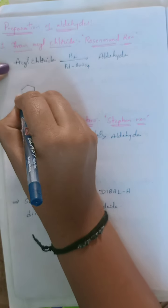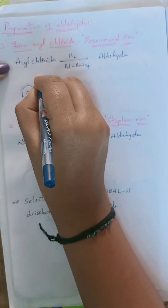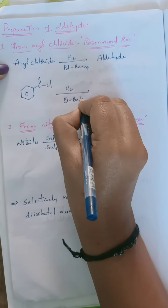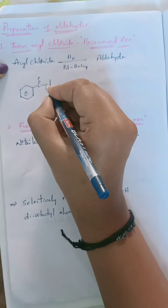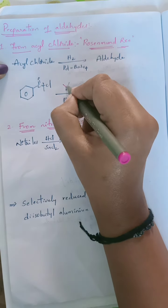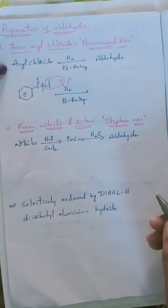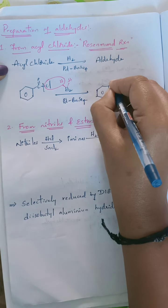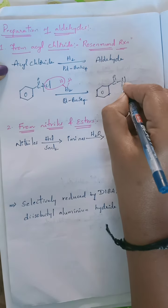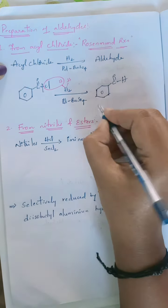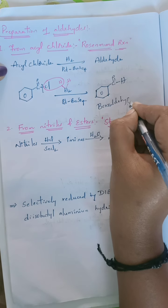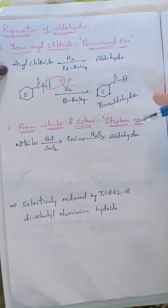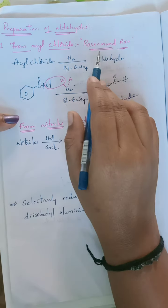In the Rosenmund reaction with aromatic acid chloride: two hydrogens are present, one hydrogen is taken by Cl and eliminated as HCl, and the other hydrogen is added to the C=O group. This gives a C=O–H group, which is an aldehyde — specifically benzaldehyde is obtained. When acyl chloride undergoes hydrogenation in presence of palladium and barium sulfide, it converts into aldehyde, and this method is known as the Rosenmund reaction. Very important for two-mark board exam questions.